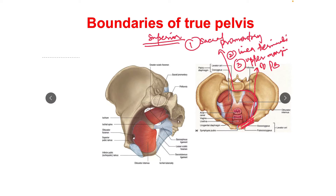तो तीन superior boundaries आते हैं: sacral promontory, linea terminalis, and upper margins of the pubic bone. Linea terminalis के बारे में detail में पढ़ने के लिए please check out the video in the description or above.